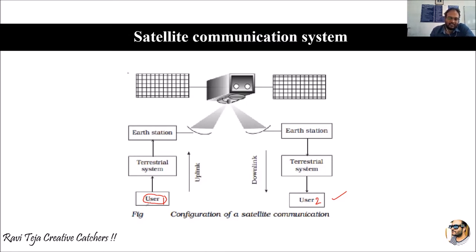User 1 initially sends the signal to the terrestrial system, which is our service provider. This service provider gives the signal to the earth station. The earth station has huge antennas used to communicate with the satellite. There is a single satellite communicating between User 1 and User 2. The earth station receives the signal — which may be live video streaming or mobile communication — takes the data from the terrestrial system, and transmits it to the satellite in orbit.